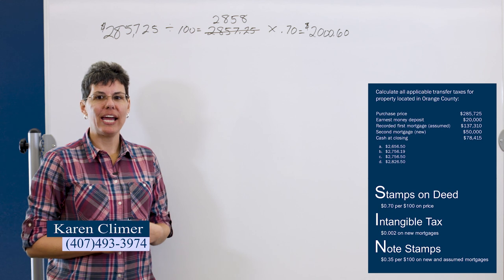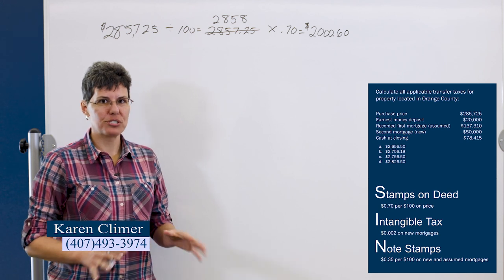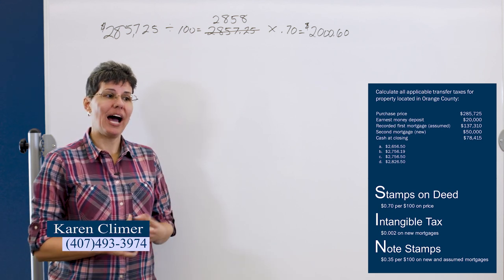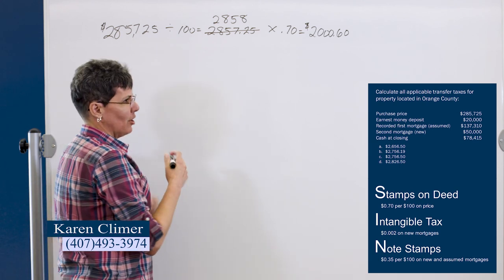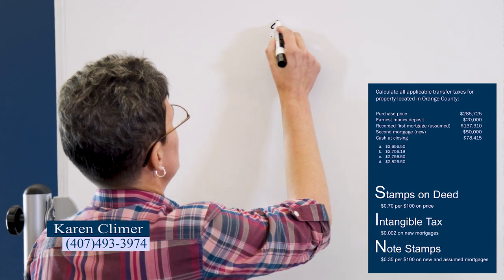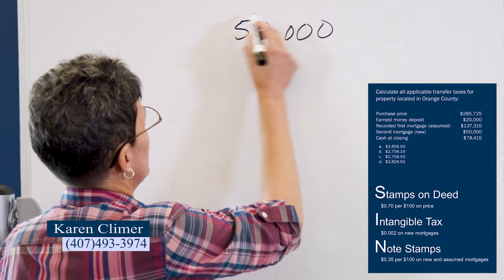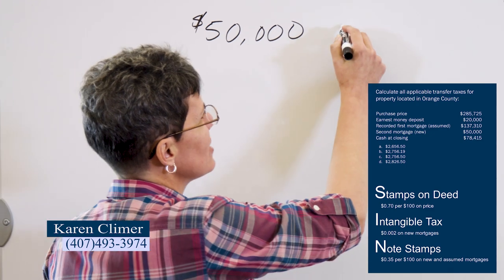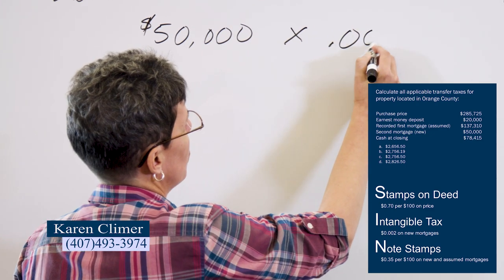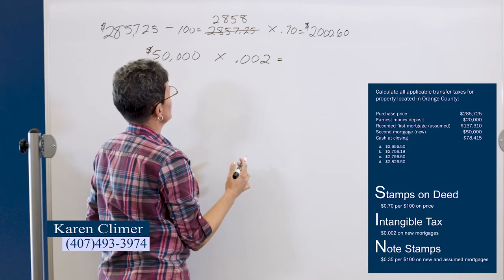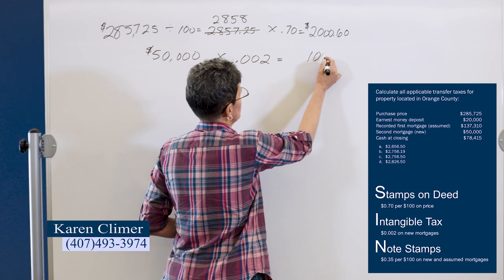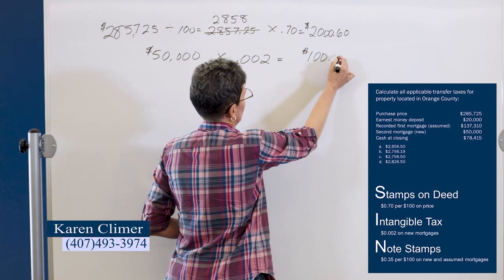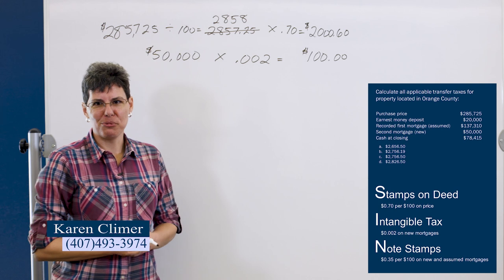So the next thing we have is intangible tax, the I. And this is on brand new mortgages. The first time it's ever been a mortgage. So you do not pay this on assumed mortgages. So in our problem, we have a new mortgage of $50,000. And this is a tax. It's not a stamp. It's just a regular tax of 0.002. So 50,000 times 0.002 is going to give us $100. So that's the intangible tax.